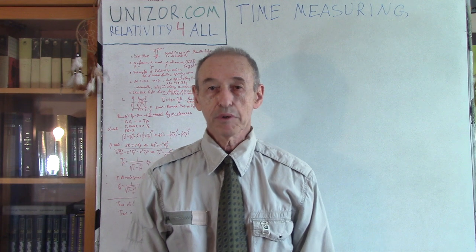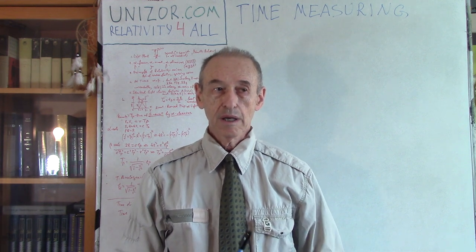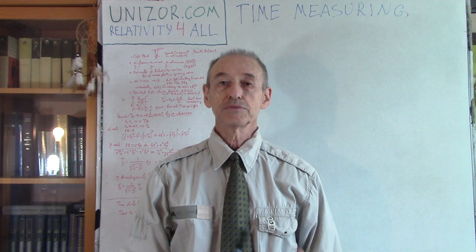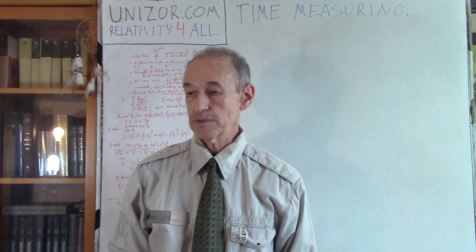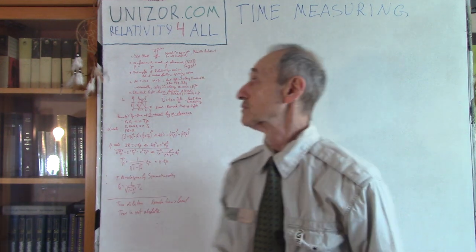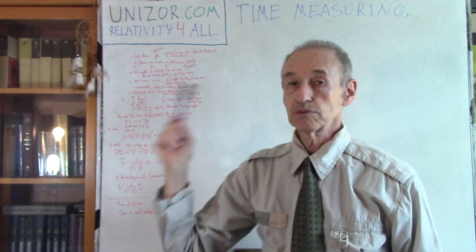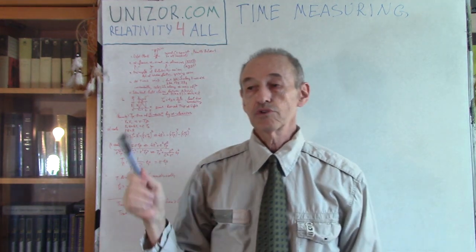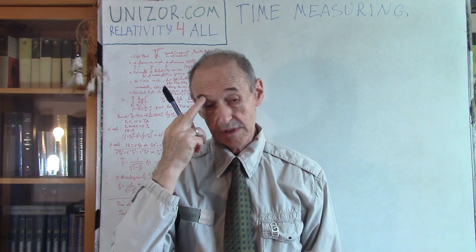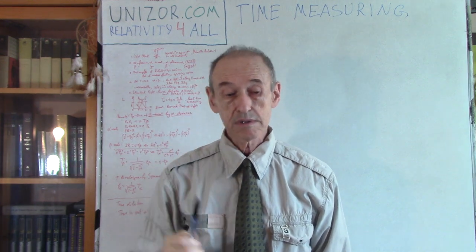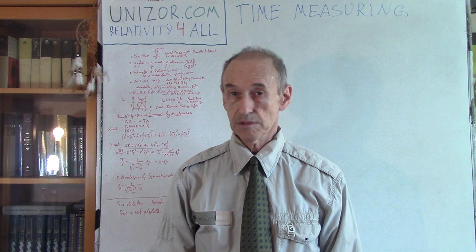This lecture is about time — how we measure time and how time is measured in different inertial systems. This lecture is part of the course called Relativity for All, presented on unizor.com, together with two other prerequisite courses: Math for Teens and Physics for Teens.